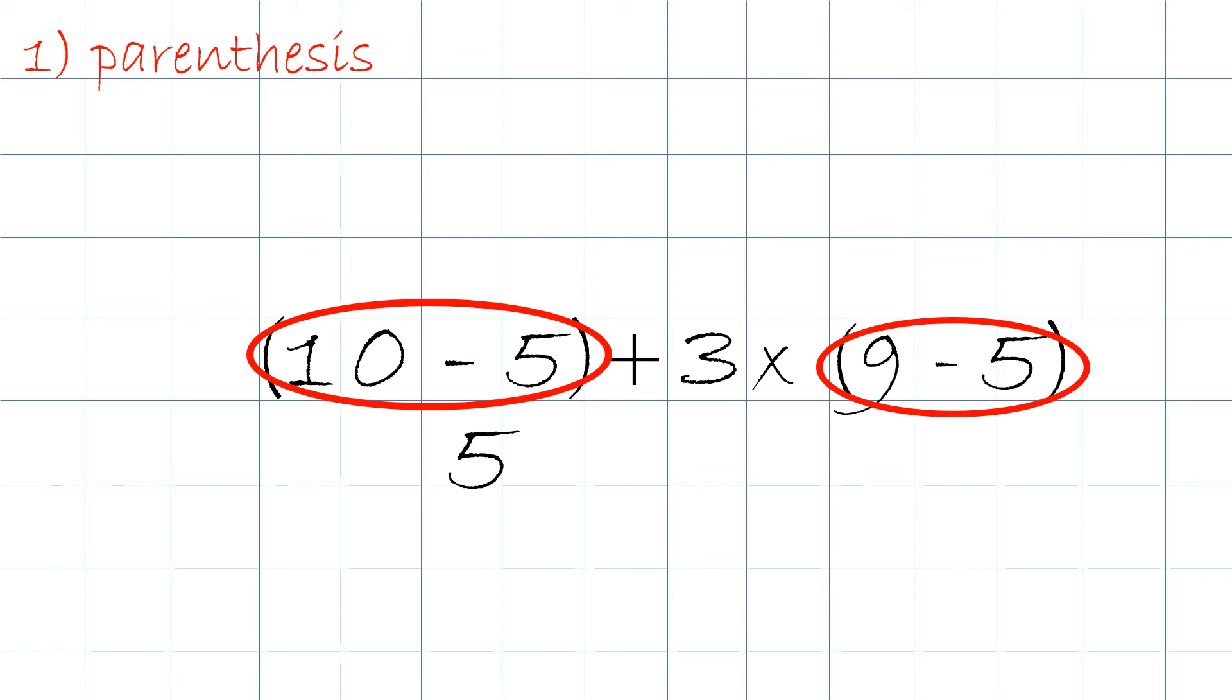And also, 9 minus 5 is in the parentheses and the answer will be 4. We then rewrite the sentence.